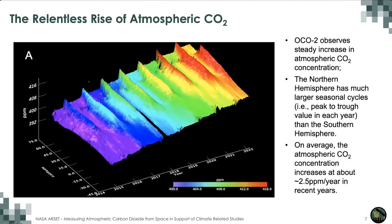This shows column CO2 concentration observed by OCO2 as a function of time and latitude. It shows a steady increase of atmospheric CO2 concentration with time — about 2.5 parts per million per year. It also shows that the Northern Hemisphere has much larger seasonal changes than the Southern Hemisphere.